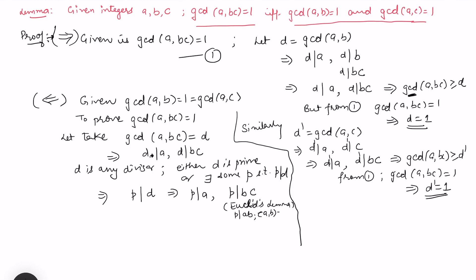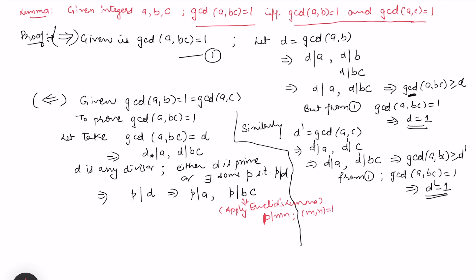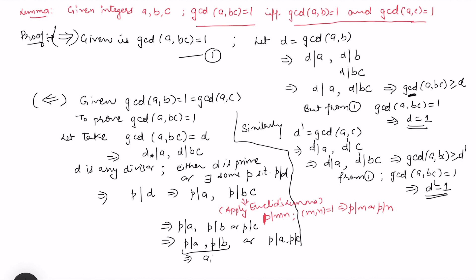Euclid's lemma states: if p divides mn and gcd(m, n) = 1, then p divides m or p divides n. Applying this here — since p divides bc, we get that p divides b or p divides c. So either p divides a and p divides b, or p divides a and p divides c.